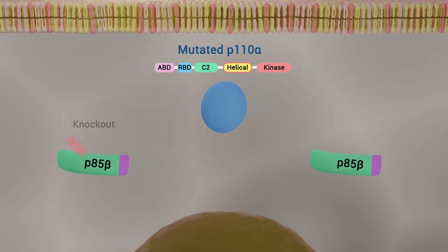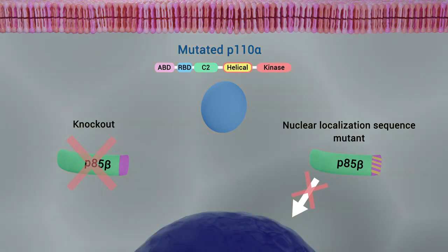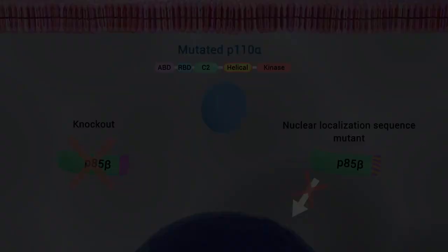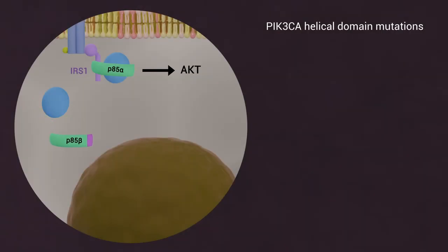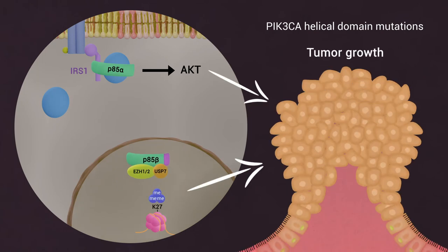Moreover, knockout of P85 beta or a P85 beta nuclear localization sequence mutant reduces the growth of tumors harboring a PIK3CA helical domain mutation. These results illuminate a novel mechanism by which PIK3CA helical domain mutations exert their oncogenic function.